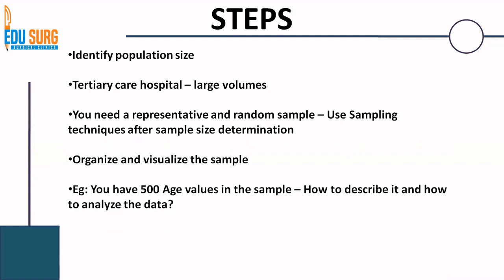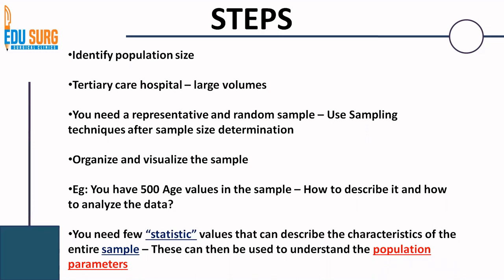Once you have done your sampling, you organize and visualize the data. Suppose you now have 500 age values in a sample — how will you describe and analyze it? You can't individually estimate all 500 values. You need some values from these 500 that represent specific characteristics of the sample. If you can identify the center point of the data and the extremes, you know all 500 values fall within that range. You need a few statistic values that can describe the characteristics of the entire sample, and these values can then be used to understand population parameters.